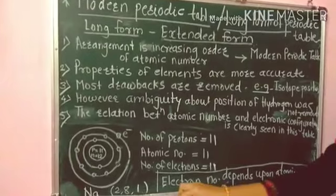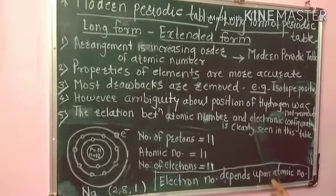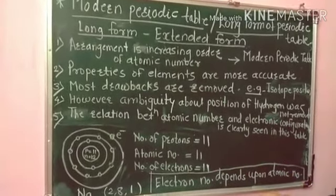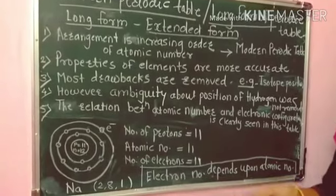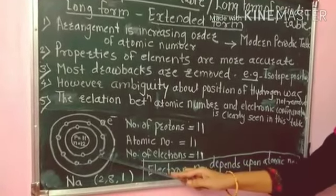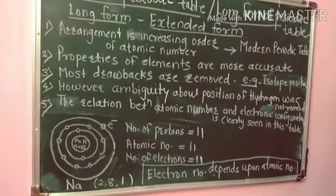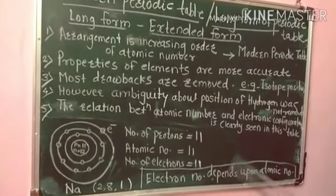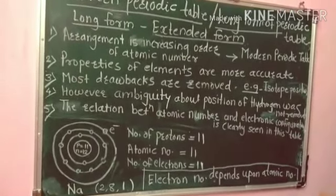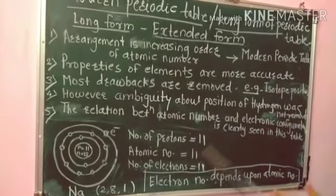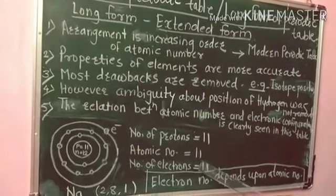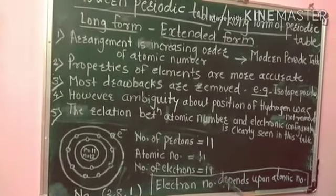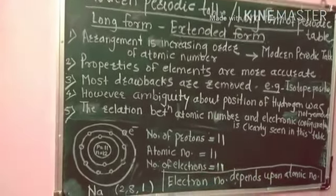As we studied in 9th standard, sodium donates 1 electron to chlorine. If sodium donates 1 electron, then the number of electrons in sodium becomes 10, while the proton number remains 11. So the atomic number of sodium is still 11, because the atomic number depends on proton number, not on the number of electrons.